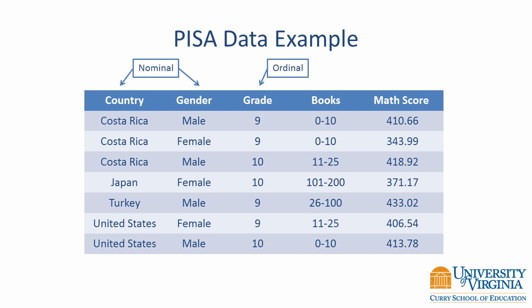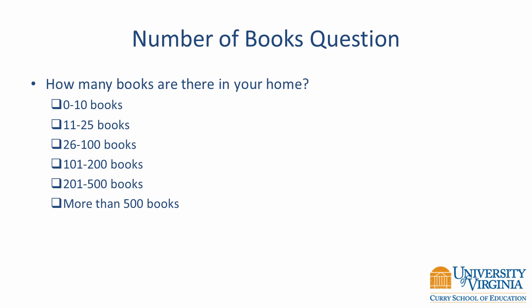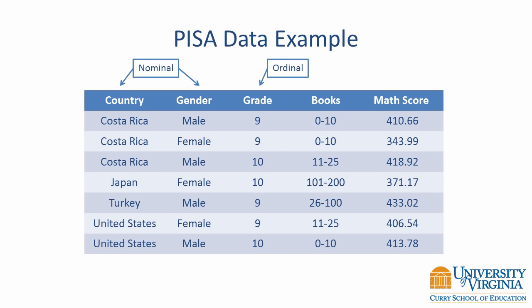Grade is ordinal, but what about books? This variable represents the number of books in the home. If the data were recorded as the actual frequency count, it would be a ratio scale — there are equal units and an absolute zero. However, as you can see from the survey question text, the frequency counts were grouped into ordered intervals, and the number of units in each response option is not the same. Therefore, this variable is actually ordinal. It is always important to know what your data actually represent in order to determine the data type.